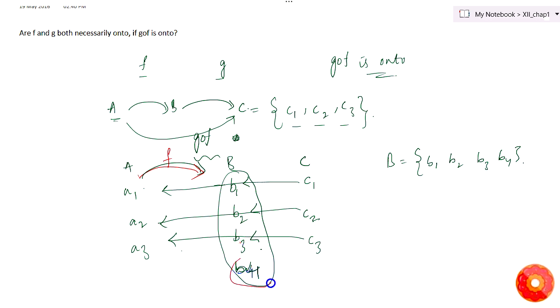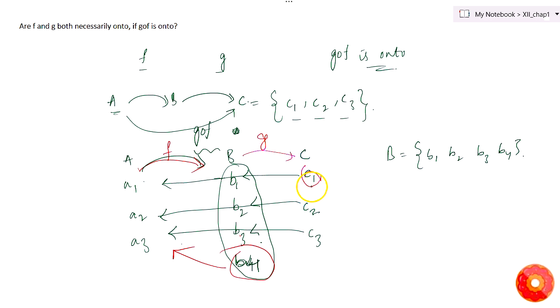For b4 there is no preimage in a, so f is not onto. However, g is onto because for every c there is a preimage in b. Therefore, both f and g need not necessarily be onto even when g of f is onto.